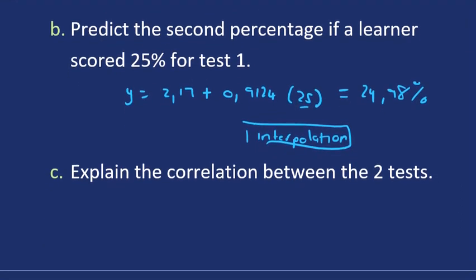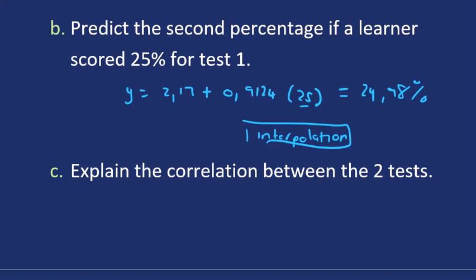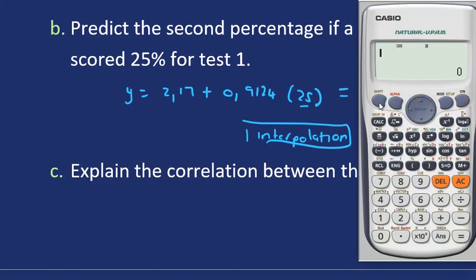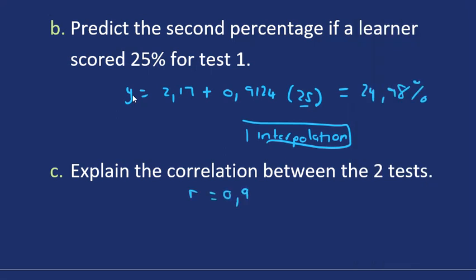The last question: We are asked to explain the correlation between the two tests. If we want to do that, we're looking for r, number three, that will tell us the correlation. So if you go to number three, we have a correlation of 0.9966.